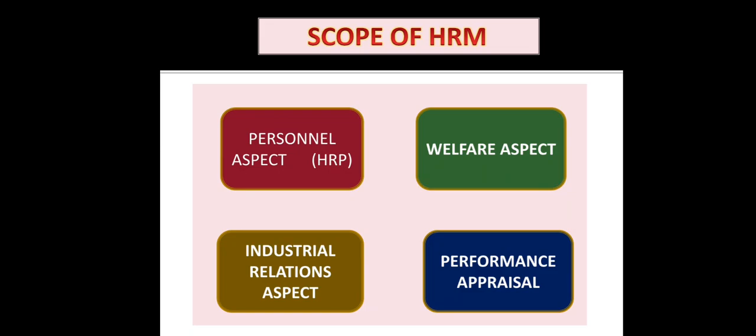The third is the industrial relations aspect. A major important area of HRM is maintaining cordial relations with union members. This helps the organization prevent strikes and lockouts and ensures smooth working in the company. This also covers union management relations, joint consultation, collective bargaining, grievance and disciplinary procedures, settlement of disputes, etc.